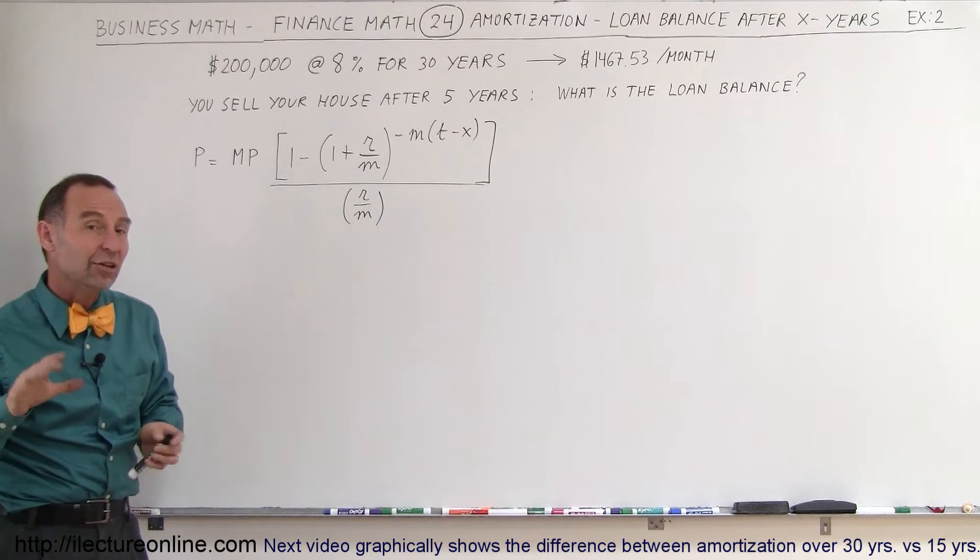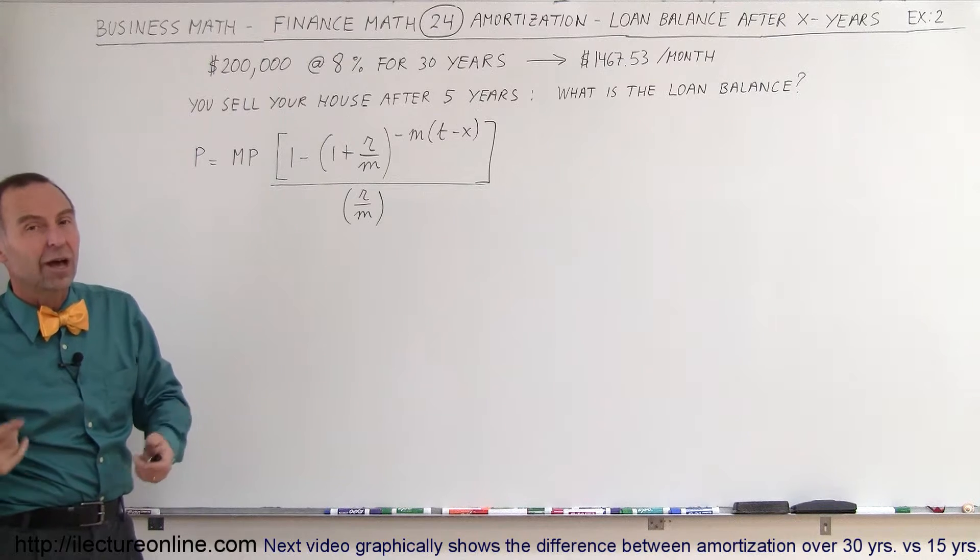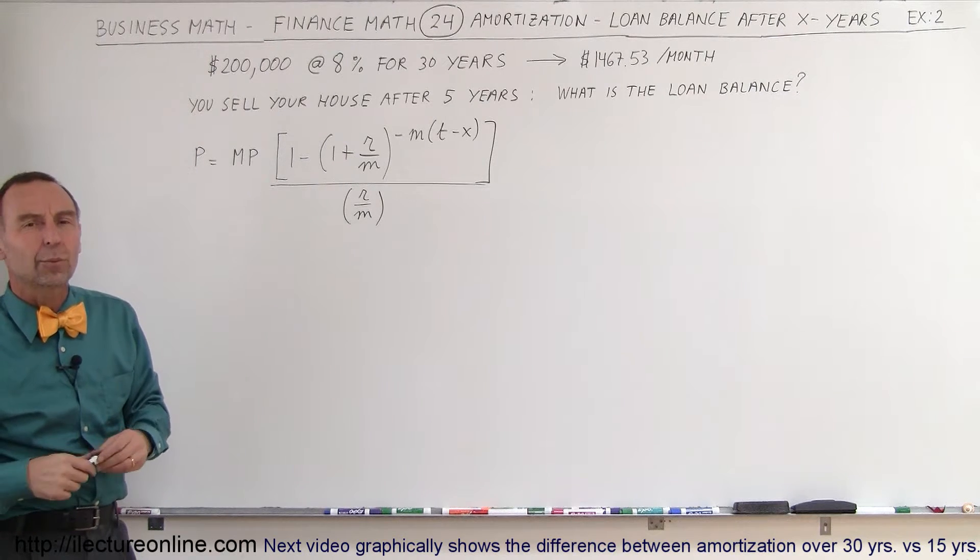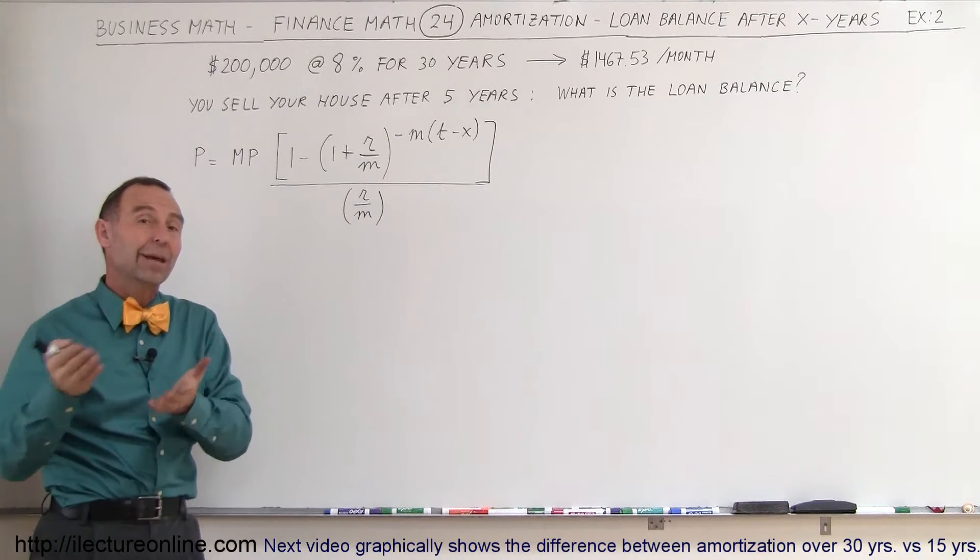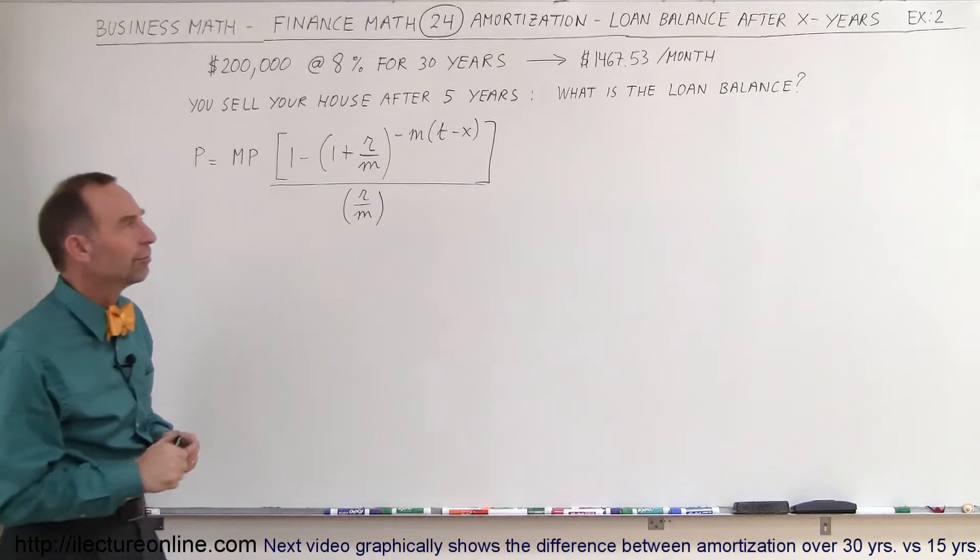So after five years, let's say you want to sell your house, how much do you still owe to the bank? What is the principal remaining? And so when you sell your house, you have to then pay that to the bank, and then what's left over is for yourself.